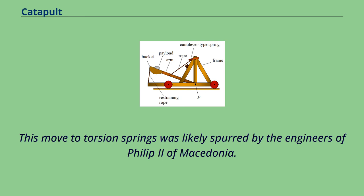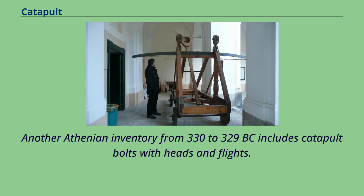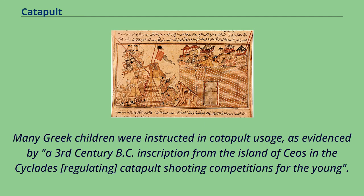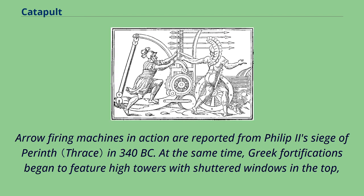This move to torsion springs was likely spurred by the engineers of Philip II of Macedonia. Another Athenian inventory from 330 to 329 BC includes catapult bolts with heads and flights. As the use of catapults became more commonplace, so did the training required to operate them. Many Greek children were instructed in catapult usage, as evidenced by a 3rd-century BC inscription from the island of Ceos in the Cyclades, regulating catapult-shooting competitions for the young.